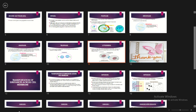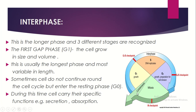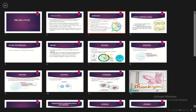To conclude: the cell cycle has two main phases — interphase and the M phase. The M phase consists of mitosis and cytokinesis. In G1, the cell grows in size and volume. In the S phase, DNA replicates forming 92 chromatids. In G2, the cell prepares for division. Mitosis has four stages: prophase, metaphase, anaphase, and telophase. Finally, cytokinesis forms two identical daughter cells.